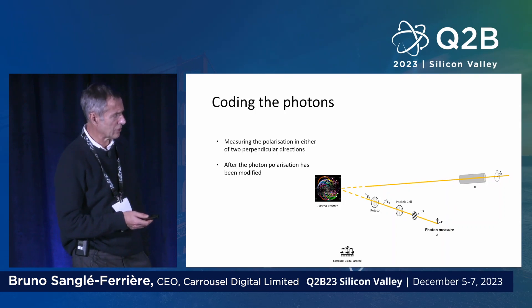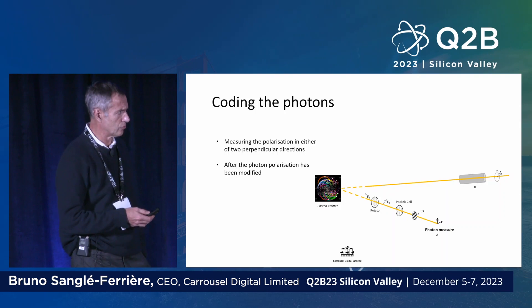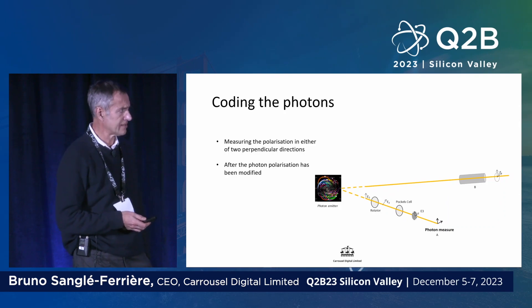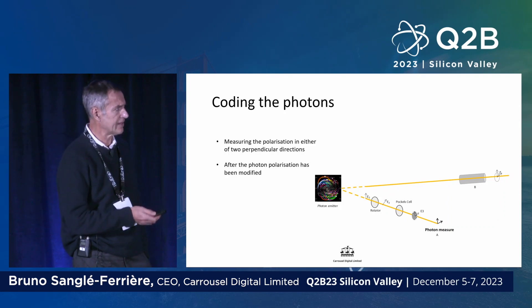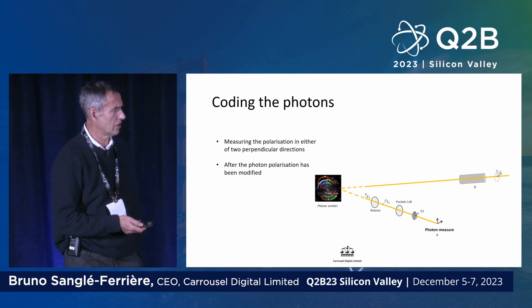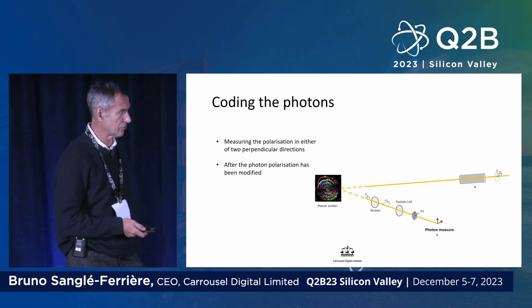Then we go through Pockels cells to imprint a phase — the phase that we want as well. And then we measure the photon with two orthogonal photon detectors.